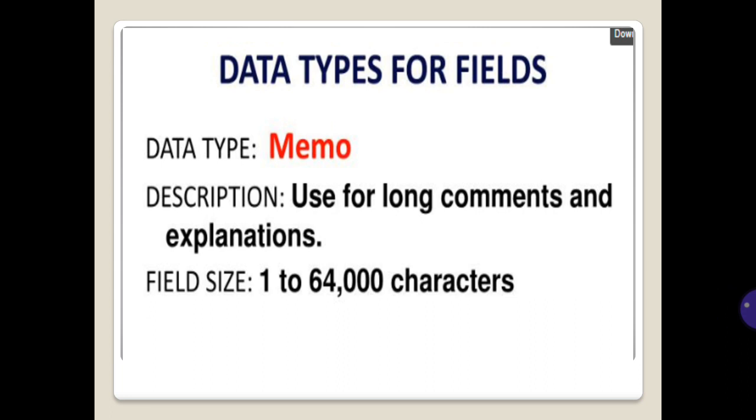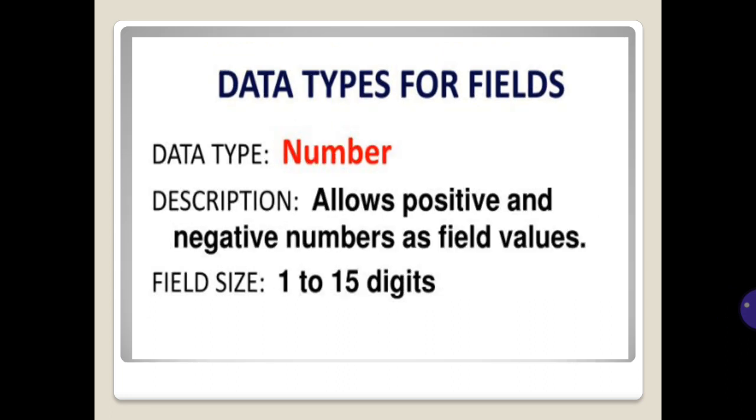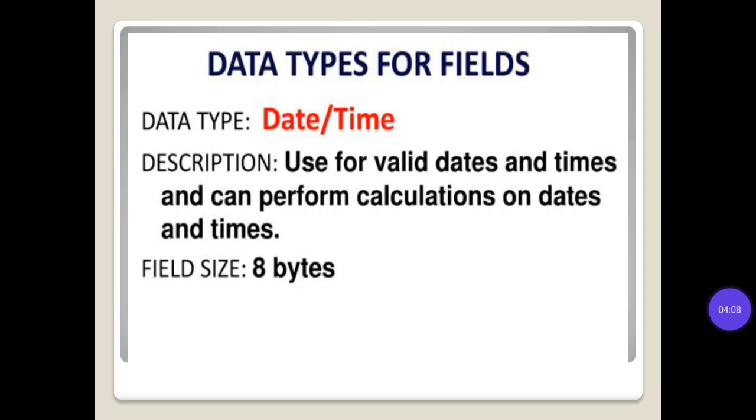Data type: number. Description: allows positive and negative numbers as field values. Field size: 1 to 15 digits. Data type: date or time. Description: used for valid dates and times and can perform calculations on dates and time. Field size: 8 bytes.